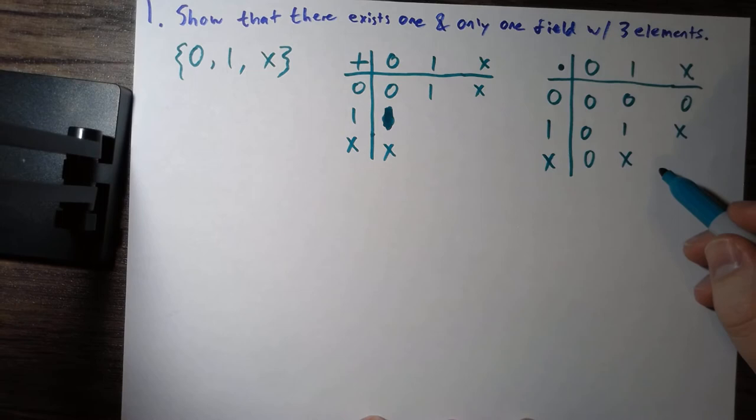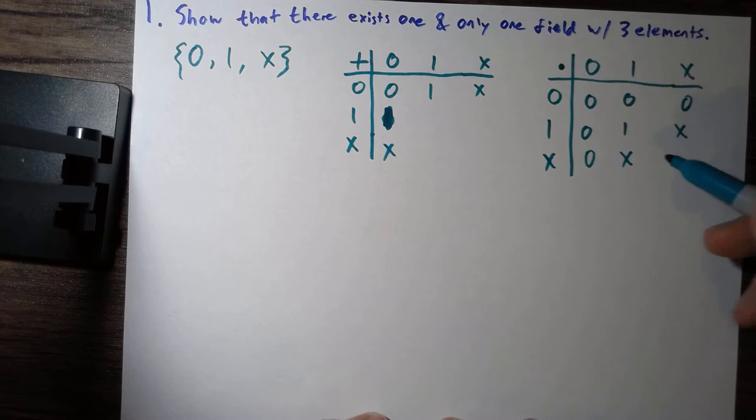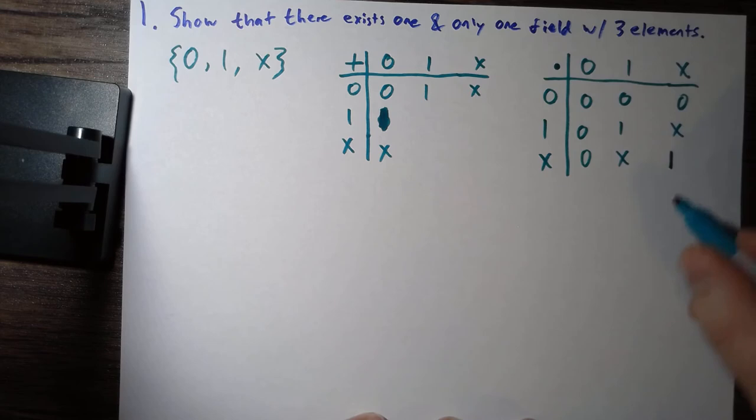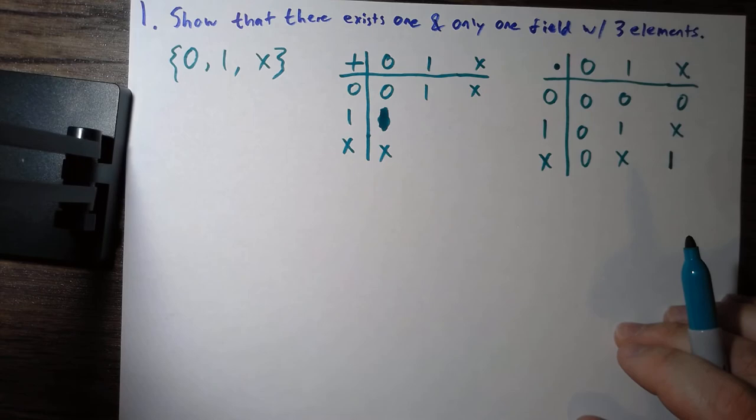And now we see that if we look at x, what happens with x is x has to have an element that's not equal to zero that when it gets multiplied by that element, it's equal to one. So we have to have x times x is equal to one. And so our multiplication tables kind of just set in stone from just looking at this.